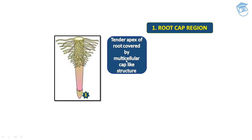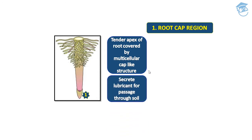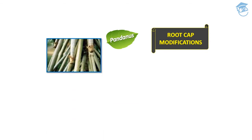The root cap region: the tender apex of the root is covered by a multicellular cap-like structure that secretes lubricant for passage through soil. The root cap protects the tender apex as it makes its way through the soil and secretes some kind of lubricant so it can pass through the soil without being harmed. Its function is protection. Now let's see root cap modifications — in pandanus, multiple root caps are seen.